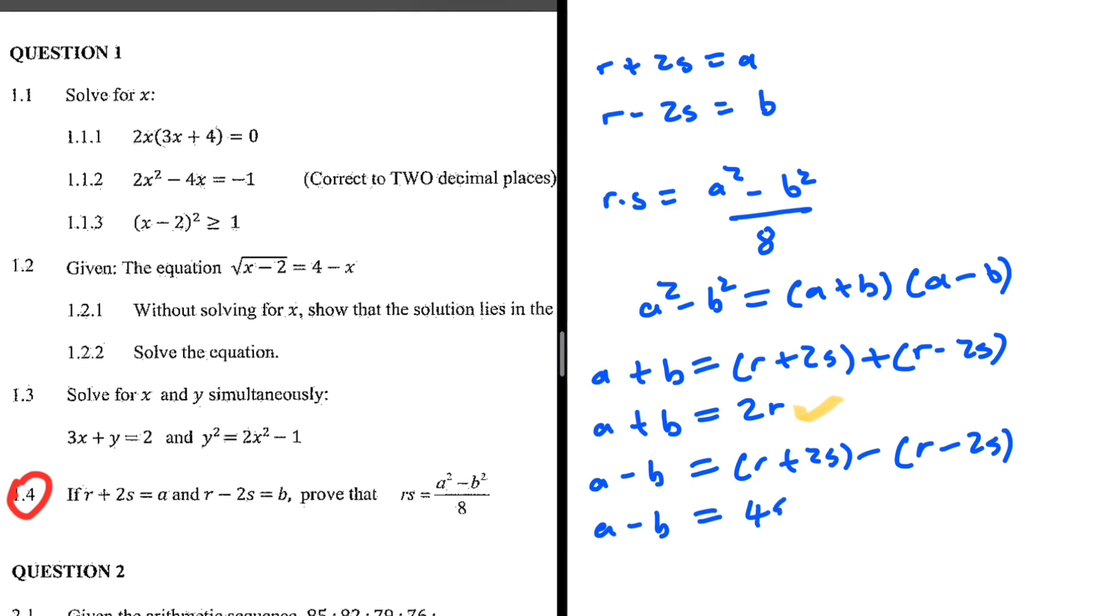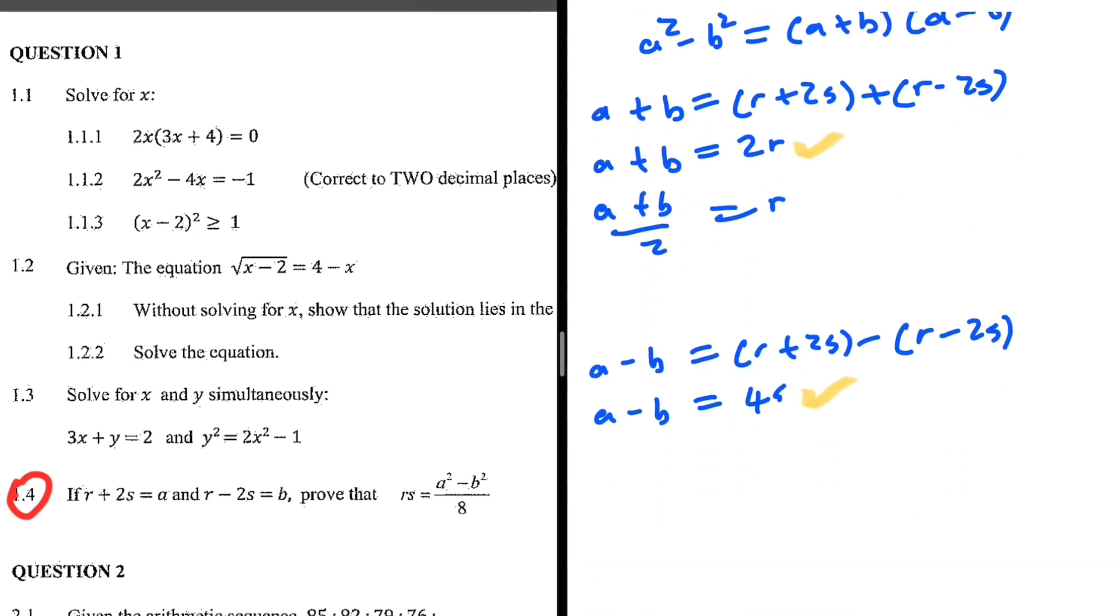If in this equation we make r the subject of the formula, we get (a plus b) divided by 2 equals r. And then in this equation, if we make s the subject of the formula, we get (a minus b) divided by 4 equals s.